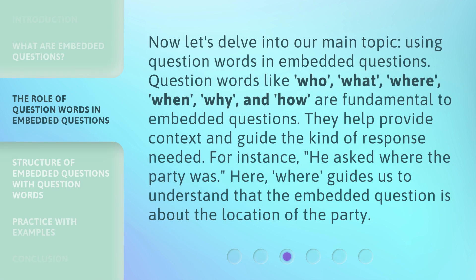Now let's delve into our main topic: using question words in embedded questions. Question words like who, what, where, when, why, and how are fundamental to embedded questions. They help provide context and guide the kind of response needed. For instance, 'he asked where the party was.' Here, 'where' guides us to understand that the embedded question is about the location of the party.